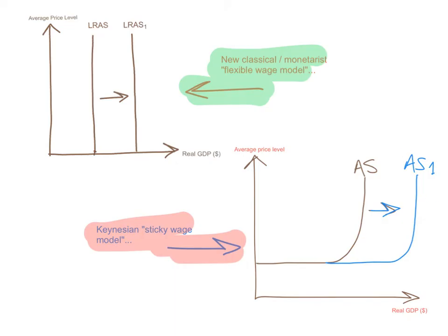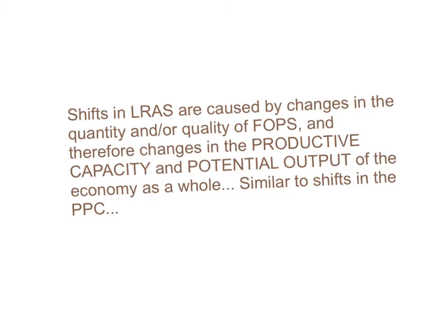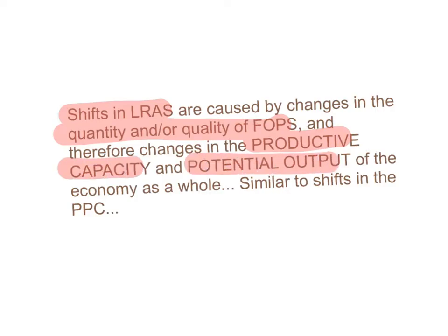It's the same idea — these are the factors that would cause the Long Run Aggregate Supply and hence the productive capacity and the potential output of the economy to shift. Shifts in Long Run Aggregate Supply are caused by changes in the quantity and/or quality of the factors of production, and therefore changes in the productive capacity and the potential output of the economy as a whole. These are very important keywords. Please do not forget terms like potential output, full employment level of output, or productive capacity when discussing shifts in Long Run Aggregate Supply.